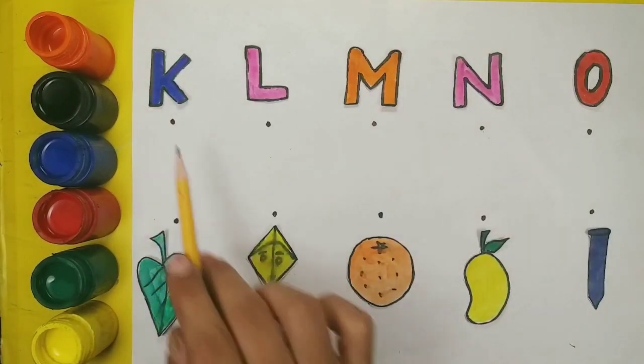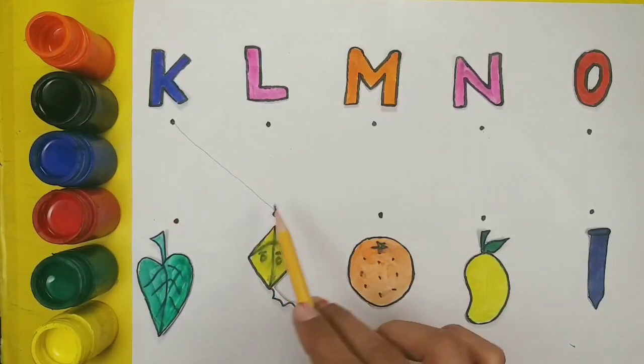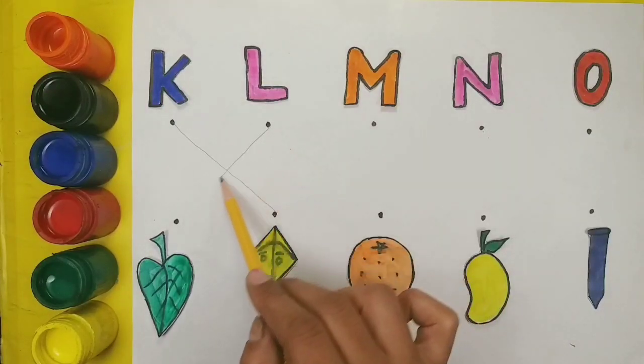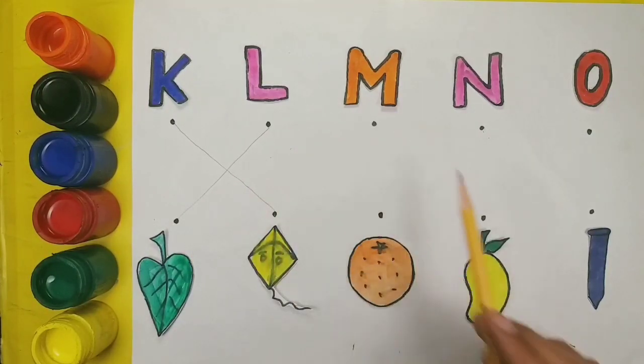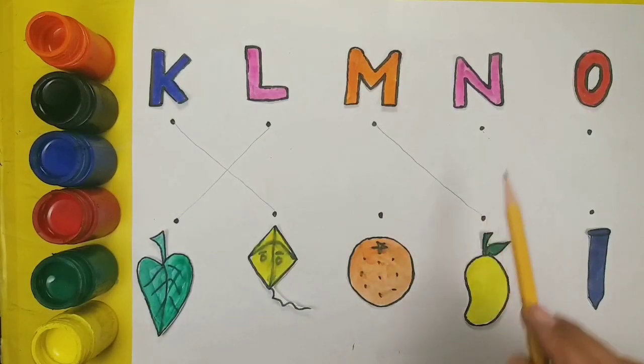K. K for kite. L. L for leaf. M. M for mango.